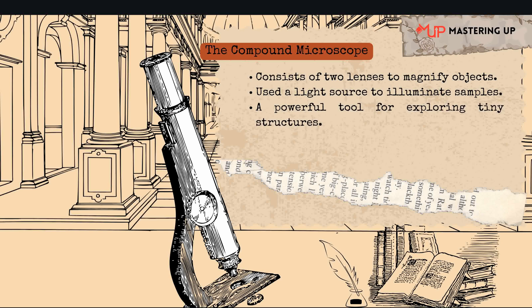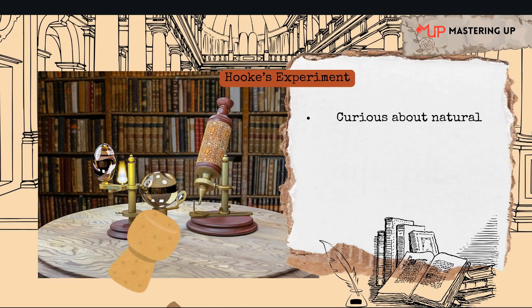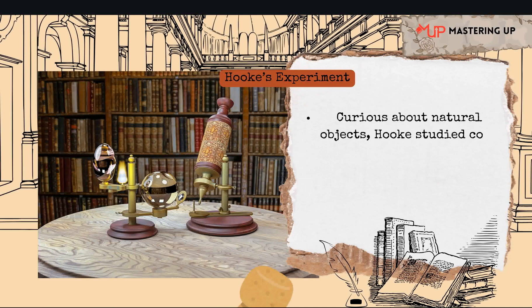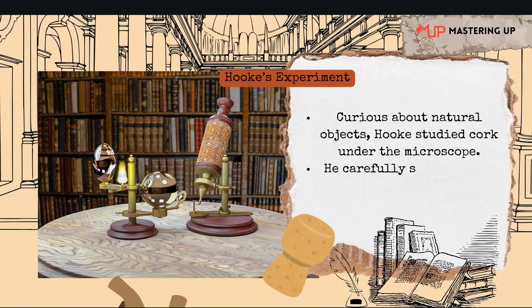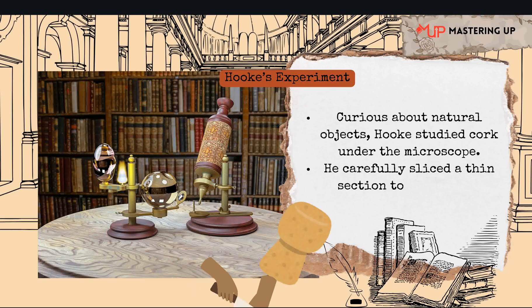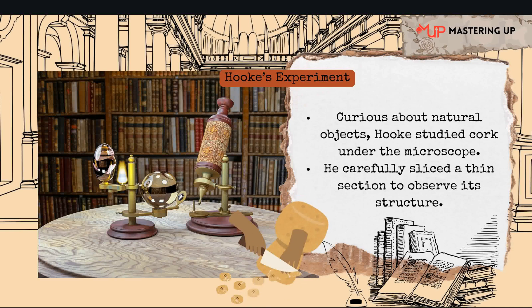Robert Hooke's compound microscope consisted of a tube with lenses at both ends and a light source to illuminate the specimen. Although it was much less powerful than today's microscopes, it allowed Hooke to see things that had never been observed before. One of the objects Hooke studied was cork, which comes from the bark of an oak tree and was commonly used for bottle stoppers. Hooke cut a thin slice of cork and placed it under the microscope, curious to see its structure.